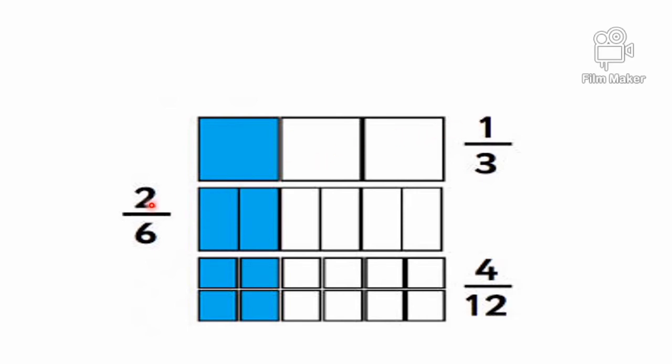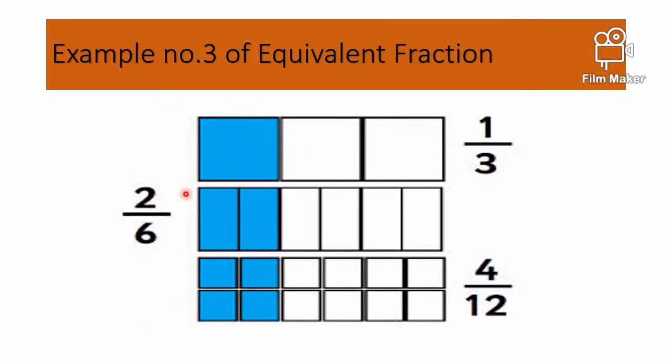2 divided by 2 is 1, 6 divided by 2 is 3. Same as 4/12. We will divide again into smaller parts. So 4/12 is also the same as 1/3. Counting: 1, 2, 3, 4, 5, 6, 7, 8, 9, 10, 11, 12. So we have 12 squares. So 4/12 is the same as 1/3.